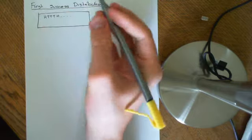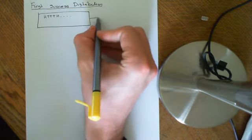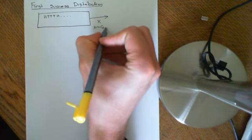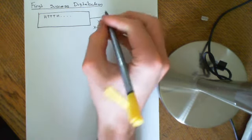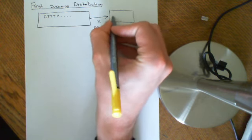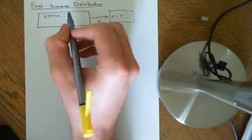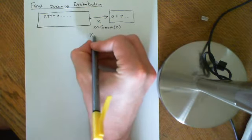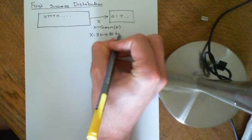In the geometric distribution, we set up a random variable. So let's say X is going to be distributed geometrically with parameter p, where p is the probability of getting a head on any given flip. We set up a random variable which maps outcomes onto 0, 1, 2, etc., and it's going to map each outcome to the number of tails preceding the first head.